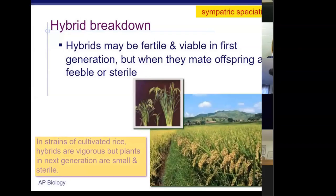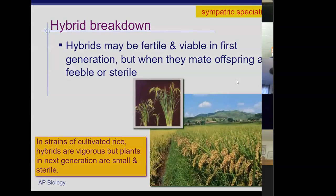Another example of hybrid breakdown is in rice species. The first-generation hybrid is vigorous, but the next generation will be small and sterile, so it is not a sustainable species.